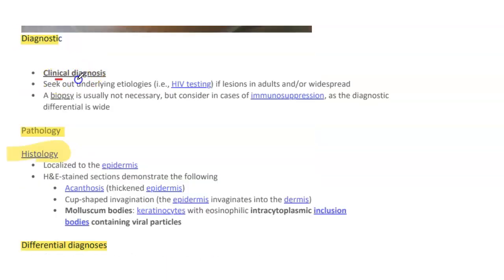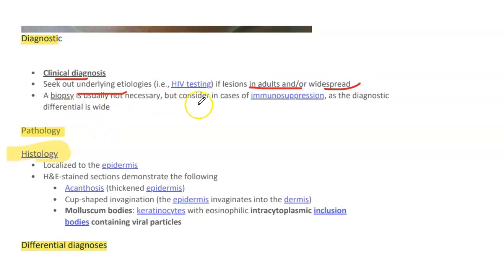Diagnosis is usually clinical, but seek the underlying etiology of the lesion in adults with widespread disease. Biopsy is usually not necessary but should be considered in cases of immunosuppression.